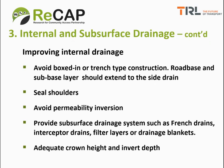The best approaches to improving internal drainage include: avoiding the boxed-in type of construction by ensuring road base and sub-base layers extend to the side drain; using sealed shoulders; avoiding permeability inversion; and where all other approaches cannot be applied, providing subsurface drainage systems such as French drains, interceptor drains, filter drains or drainage blankets — and of course ensuring adequate crown height and invert depth.